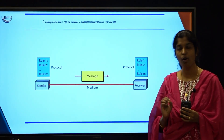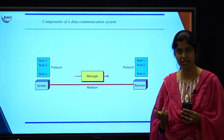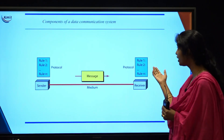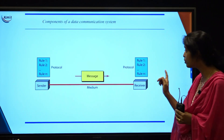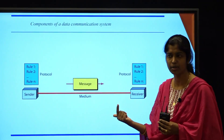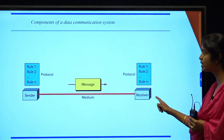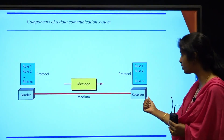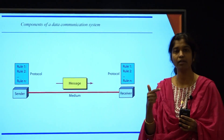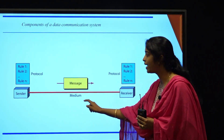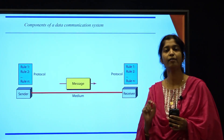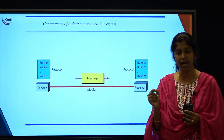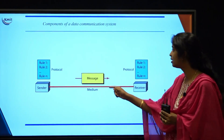Now that we have seen the definition of a data communication system, we are going to look at the components of a data communication system. Our data communication system comprises five important components. If you see the diagram, whenever we are communicating, we have at least two people talking — one I name as sender and the other is the receiver. Whatever we are communicating, the data being transmitted is the message. We have sender, receiver, message, the transmission medium, and the fifth important component is the protocol. Whenever two parties are communicating, they have to follow particular rules of communication — those rules are called the protocol.